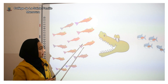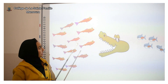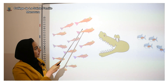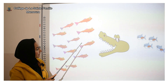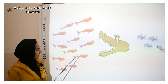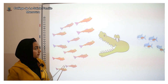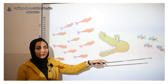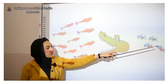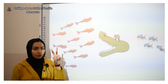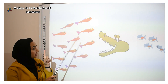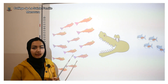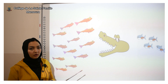He has two groups of fish. Let's count the first group: one, two, three, four, five, six, seven, eight, nine, ten, eleven, twelve. So there is a group of twelve fish. What about the other group? One, two, three, four. So now we have two groups: one group has twelve fish and the other group has four fish.